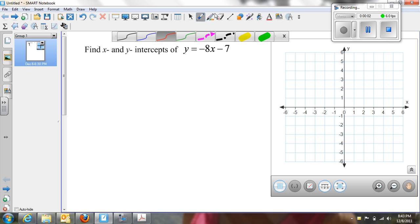In this problem, we're finding the x and y intercepts of the equation y = -8x - 7.